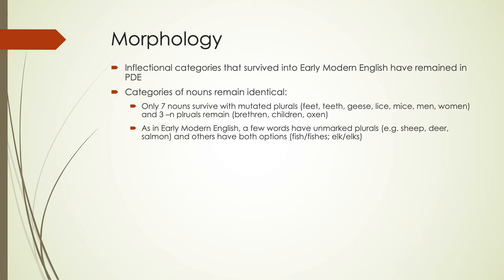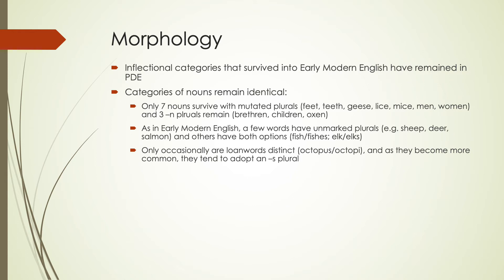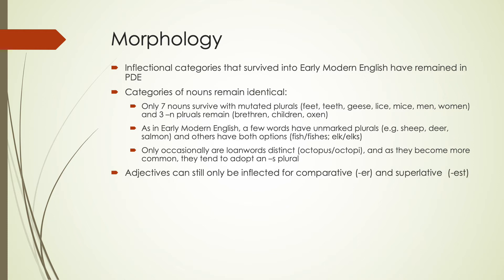As in early modern English, there are still a few unmarked plurals, typically with animals — 'sheep,' 'deer,' 'salmon' are the same singular or plural. Some might have both options: you sometimes hear 'fish' or 'fishes,' 'elk' or 'elks.' Some are starting to adopt the regular plural as well. Occasionally we see distinctions with borrowed words — 'octopus/octopi,' but also 'octopuses.' As things become more common after being borrowed, they tend to adopt the S plural.